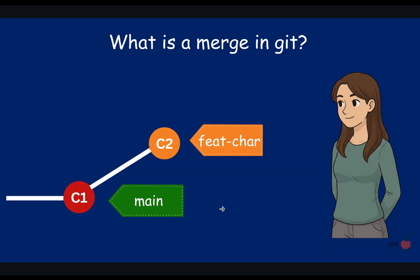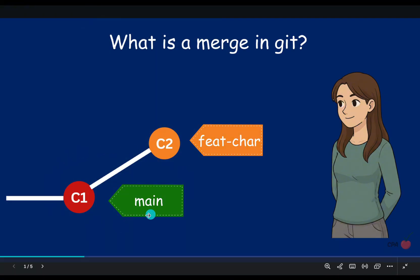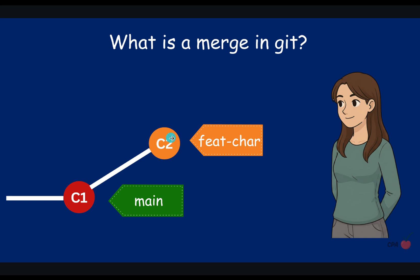In this video, we're going to consider the most basic type of merging, which is called fast-forward merge. Consider this diagram here. As shown, while we made the second commit in the feature branch, there are no new commits on the main branch.